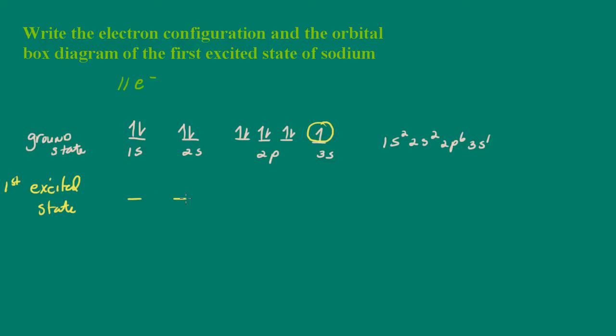And again, just as before, I'll draw my orbitals. Okay, so here is 1s, 2s, 2p, 3s, and 3p. So the electrons are in their orbitals.